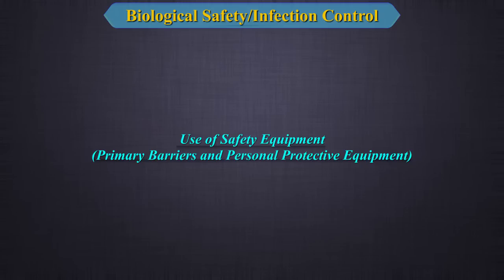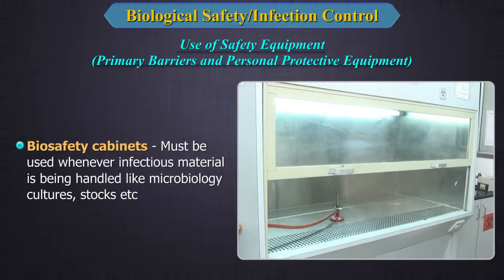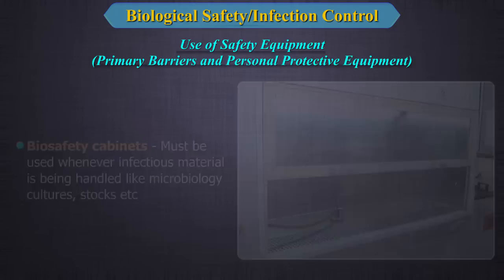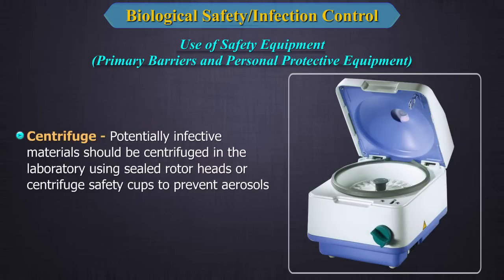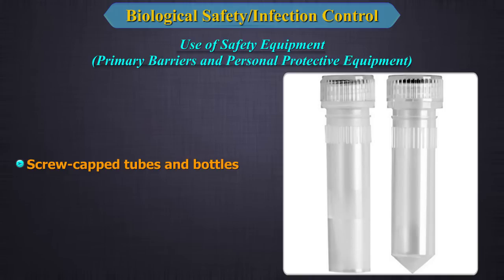Regarding safety equipment providing primary barriers and personal protective equipment: 1. Biosafety cabinets must be used whenever infectious material is being handled, such as microbiology cultures and stocks. 2. Centrifuges — potentially infective materials should be centrifuged using sealed rotor heads or centrifuge safety cups to prevent aerosols. 3. Screw-capped tubes and bottles.